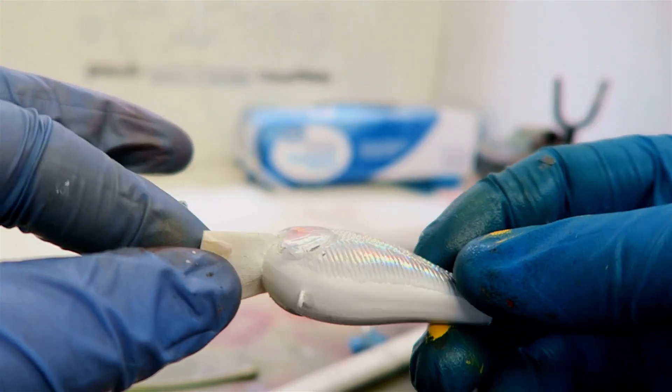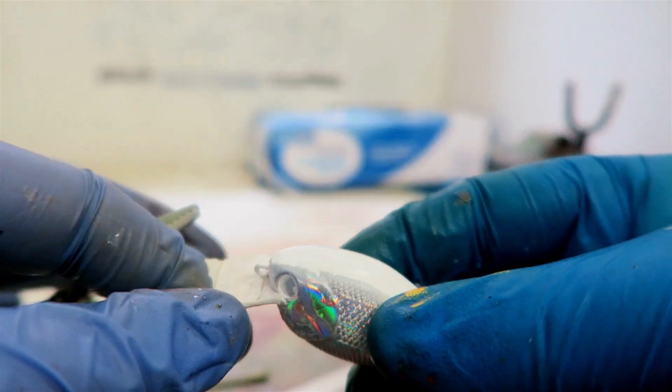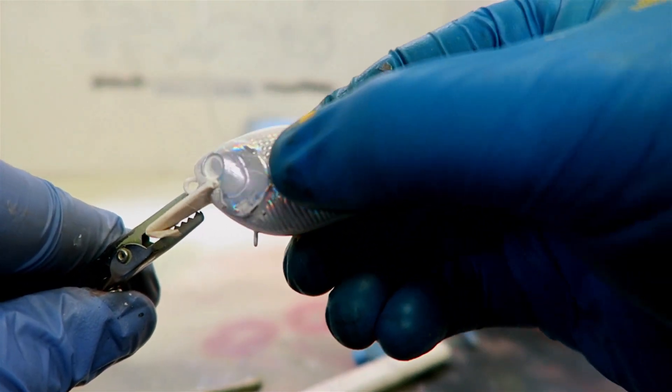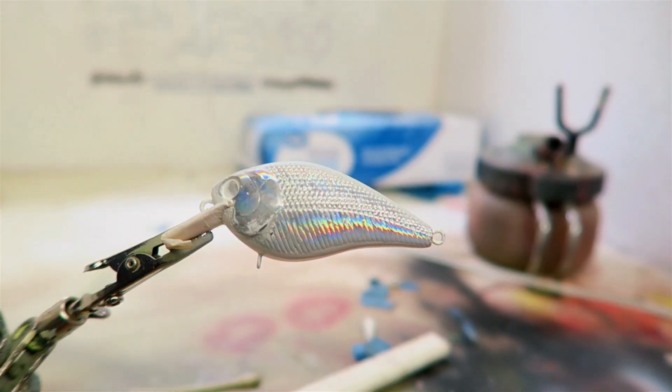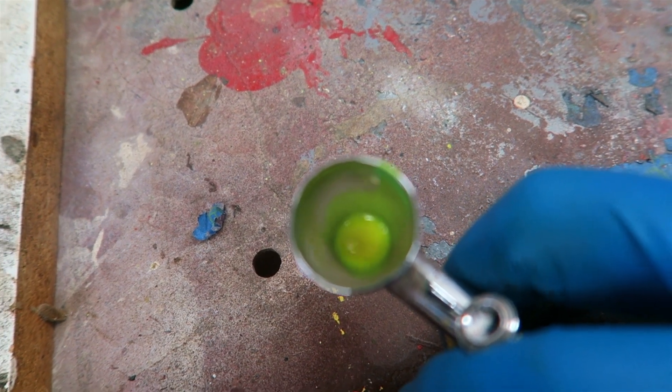As you can see this is the bait I'm painting. I'm painting up several holographics today, but that's how I first do it and I paint that white over them. So with that let's get to painting. The first coat is going to be the chartreuse and we're going to get to painting.